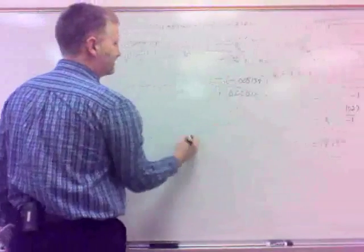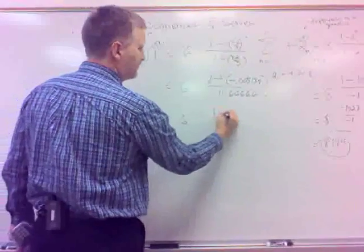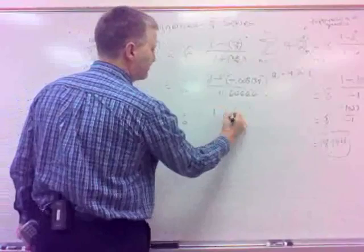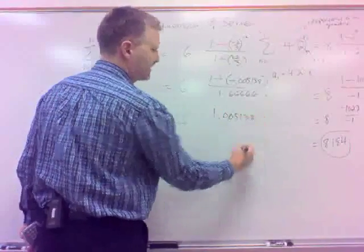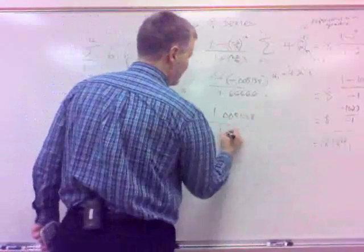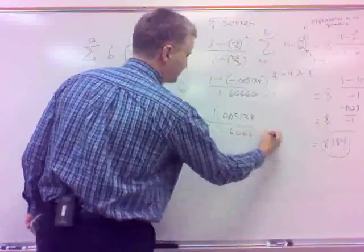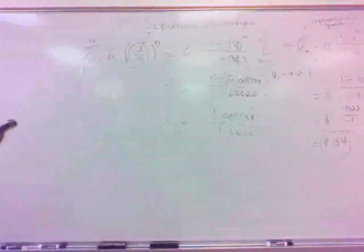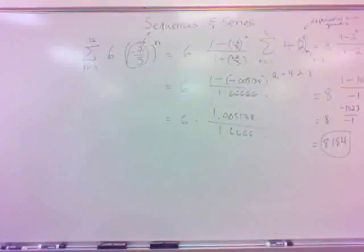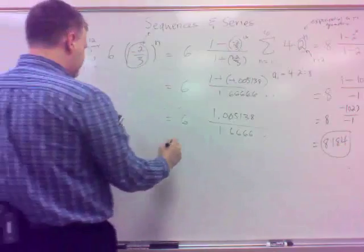Then also when I do 1 minus negative 2 thirds, that's going to be plus 2 thirds. So it's going to be 1 plus 2 thirds, which is 1.666666. So this up here also is plus, so that's going to be 6 times 1.005138 divided by 1.6666. Times it by 6. 6 times 1.005138 divided by 1.6666, so it's about 3.618.